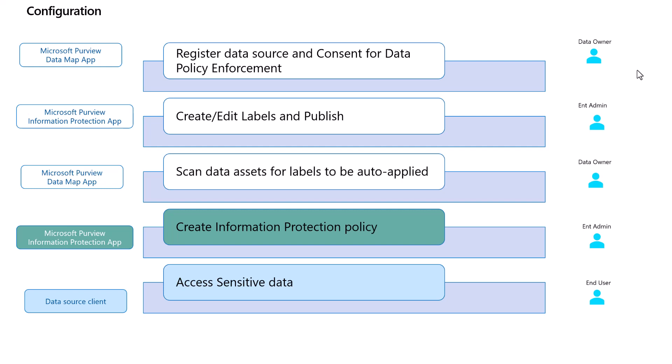Create protection policies from the information protection app. When a user tries to access the data in your data source, if it includes sensitive information, Purview policy will ensure that only authorized users will be able to access the sensitive data.